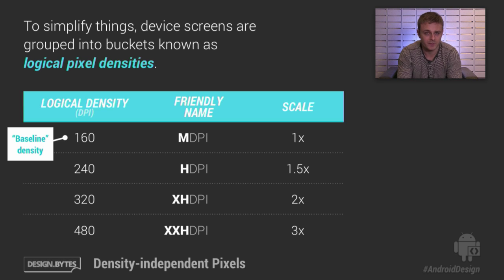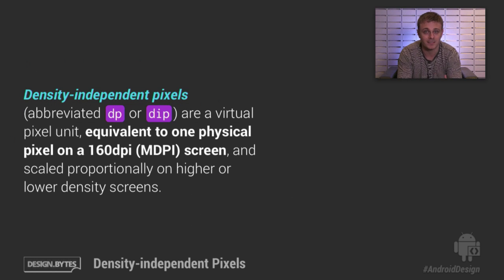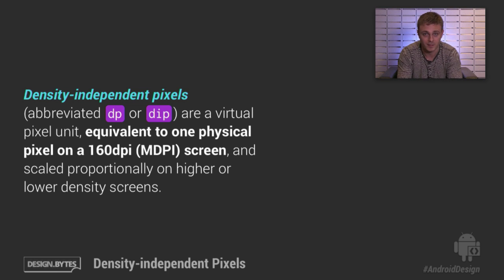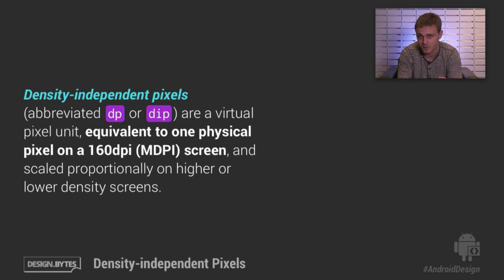Now that we understand density, let's talk about something critical to designing for Android: the density-independent pixel unit. Density-independent pixel units, sometimes abbreviated as DP or DIP, are a virtual pixel unit equivalent to one physical pixel on an MDPI or 160 DPI screen.